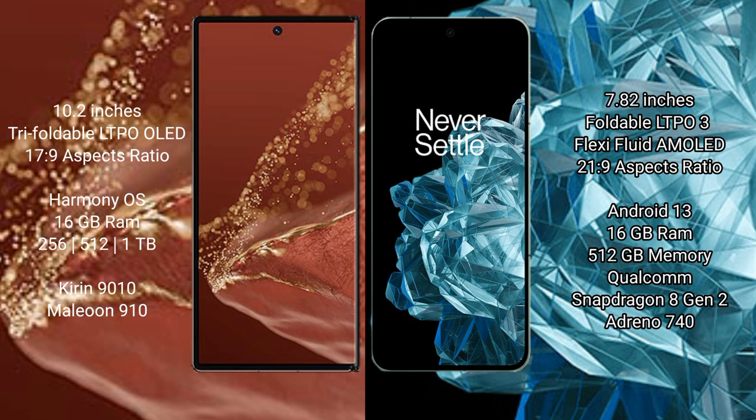Wahabamate XT Ultimate runs on the Harmonious operating system. OnePlus Open runs on Android 13. Wahabamate XT Ultimate comes with 12GB or 16GB RAM and 256GB or 512GB or 1TB internal storage.